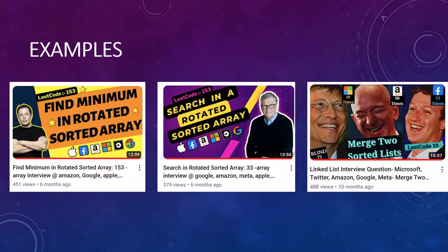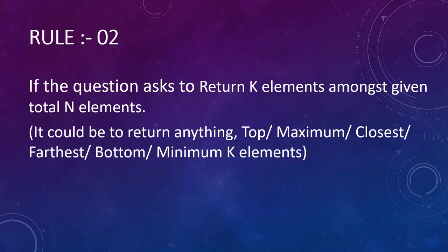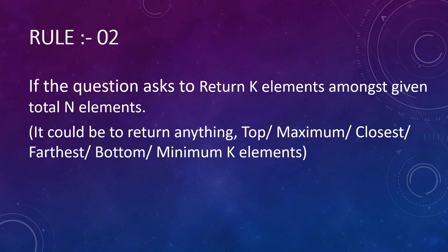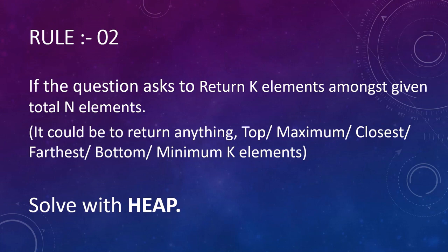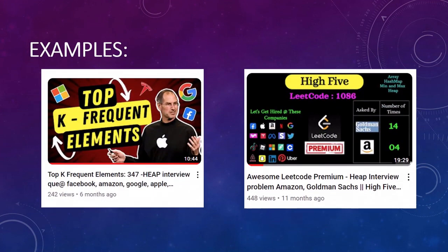There are many examples and countless problems that are of the sorted array kind, and here are just a few examples. Rule number two defines that if we are given a question where we are asked to return a subset of elements from the total — for example, the top three, bottom three, or maximum three elements — then 99% of the time we would be able to solve this problem with a heap. That should be the first thing that clicks in your mind, and you can check out a couple of examples in the linked videos.